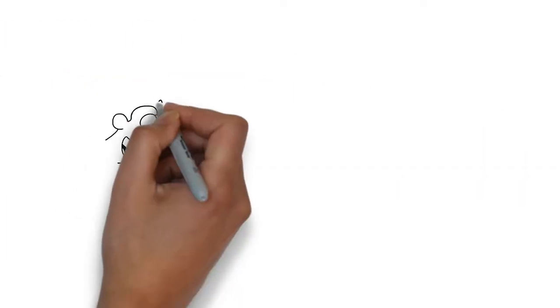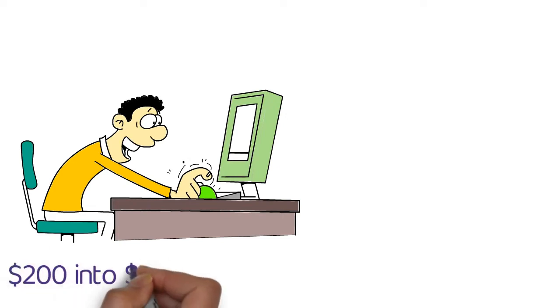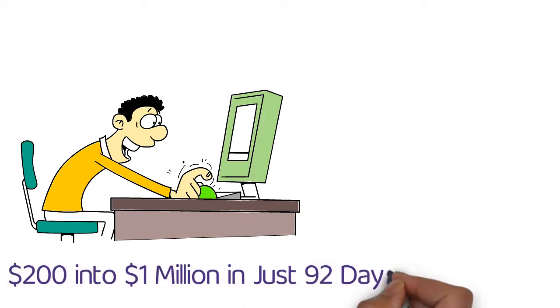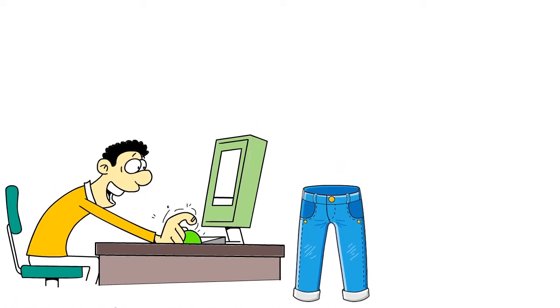Now, let's take a look at a real-life example of a 33-year-old guy who turned $200 into $1,000,000 in just 92 days by selling Kevlar pants online. Here's how it all began.